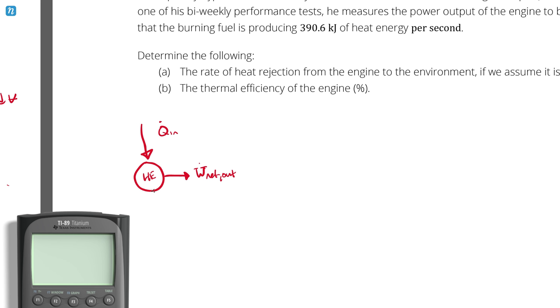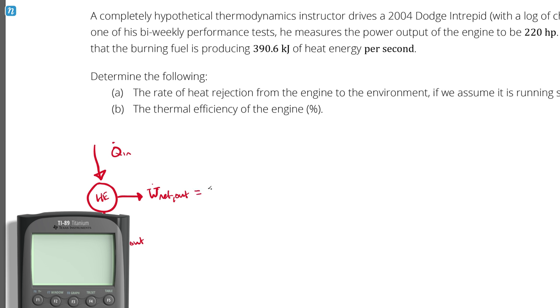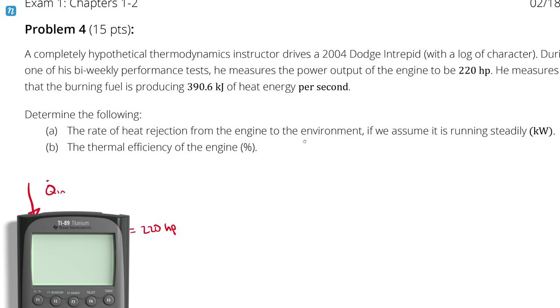Unfortunately, my engine doesn't do that very well, but a hypothetical engine. And then it can't convert all of that heat to work, so some amount of that heat is exhausted. And I know that the 220 horsepower is going to be my net power output. And then I also know Q dot in. And that's because it's reasonable for me to assume that all of the energy produced in the form of heat by burning the fuel is going into the engine.